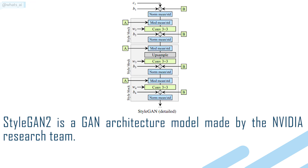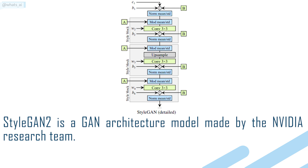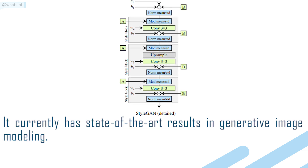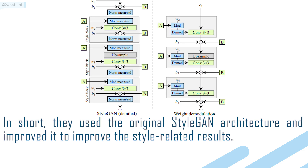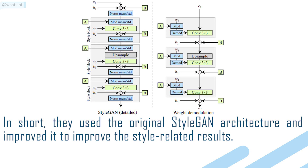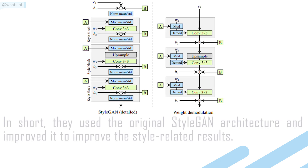StyleGAN2 is a GAN architecture model made by the NVIDIA research team. It currently has state-of-the-art results in generative image modeling. In short, they used the original StyleGAN architecture and improved it to enhance the style-related results.